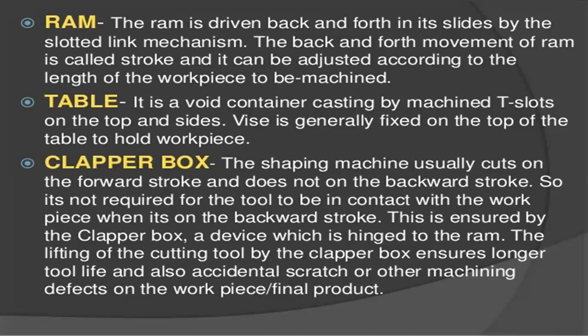These are the different types of tables: rotary tables, sliding tables, and standard tables. The clapper box is important because the shaping machine cuts on the forward stroke and does not cut on the backward stroke. It is not required for the tool to be in contact with the workpiece during the backward stroke. This is ensured by the clapper box, which is a device hinged to the RAM. The lifting of the cutting tool by the clapper box ensures longer tool life and prevents accidental scratches or machining defects on the workpiece.